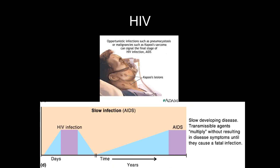HIV, human immunodeficiency virus, is a chronic — and nowadays, with medications, essentially latent — infection affecting helper T cells, causing AIDS. When AIDS first became noticeable, it was fatal. With antiretroviral therapy today, patients can live healthy for decades. We also have PrEP (pre-exposure prophylaxis), which reduces the likelihood of spreading the infection to others during sexual activity.